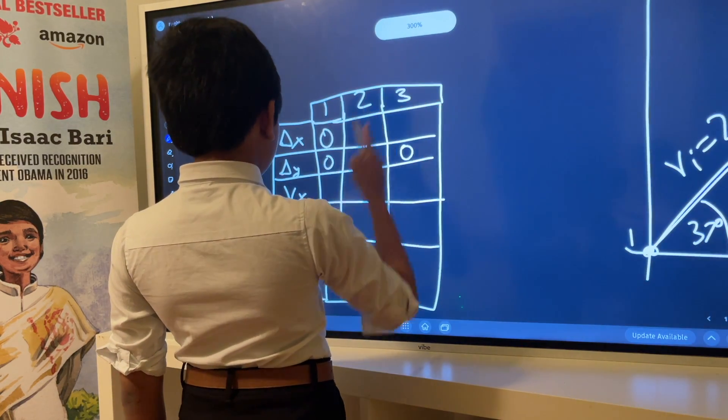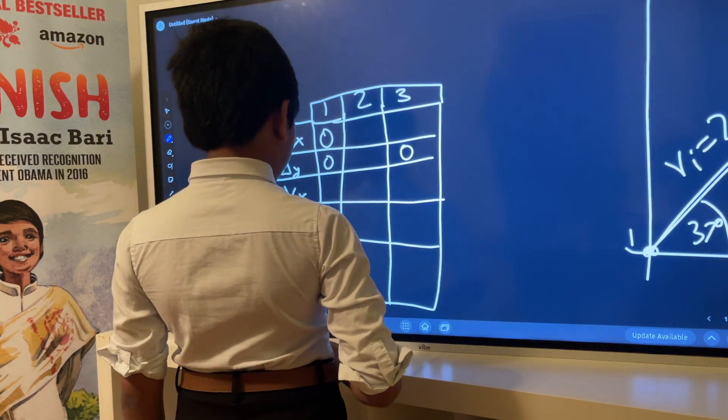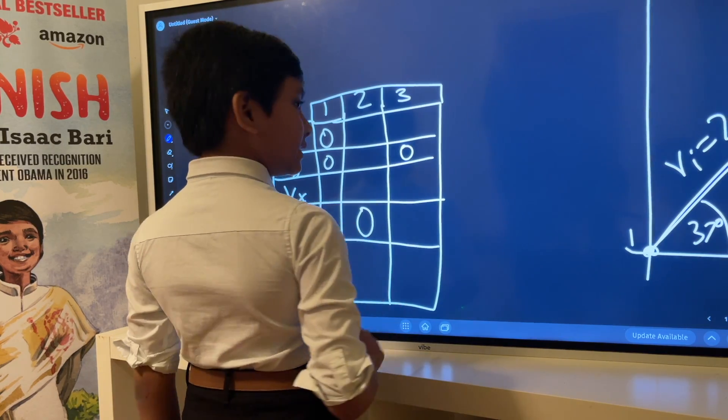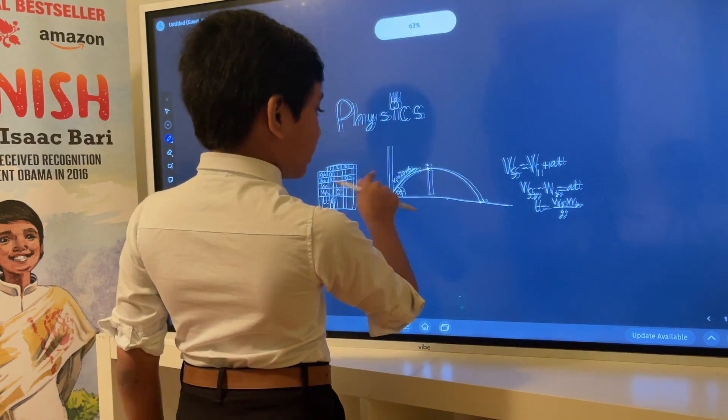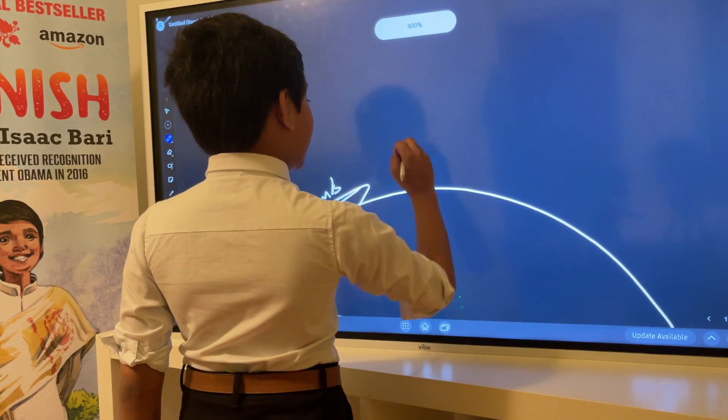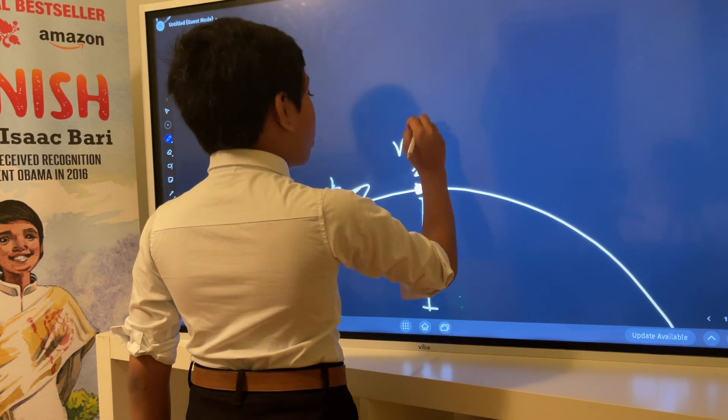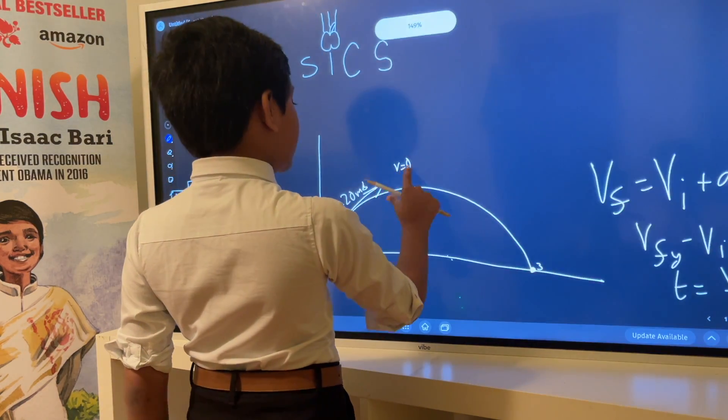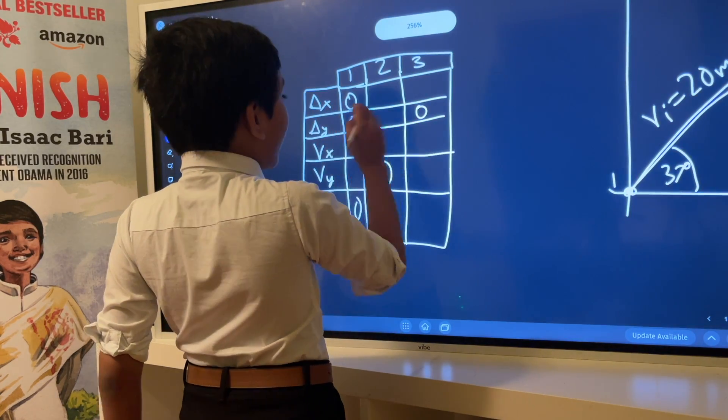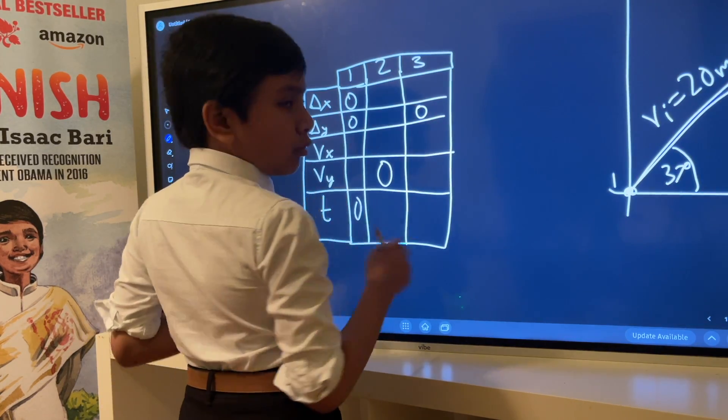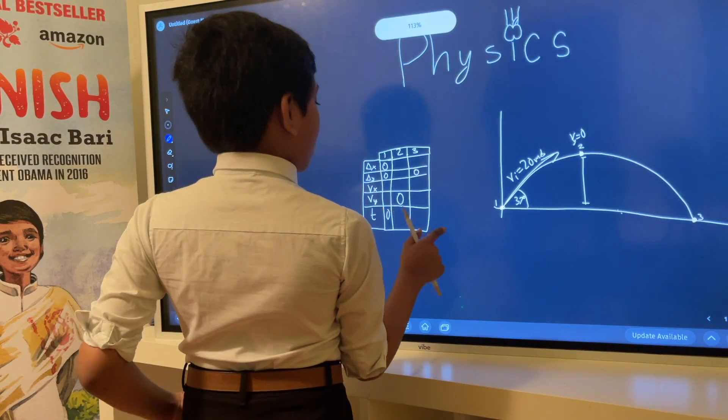We also know that v_y is zero at the maximum height. When you're at the maximum height of the trajectory, this ball is changing direction, and so for one moment the velocity in the y will be zero. The velocity in the x will be constant, but we don't know what value that constant is.